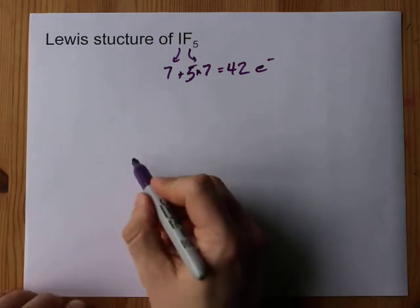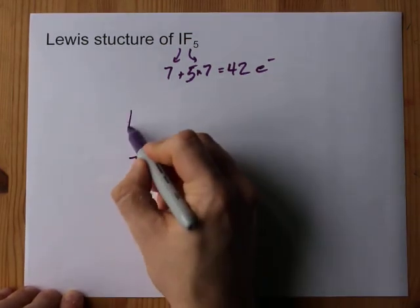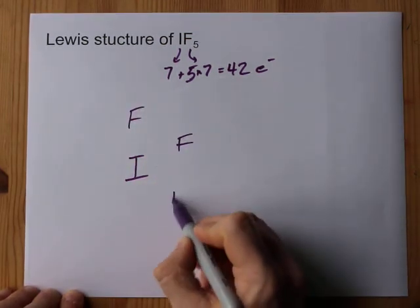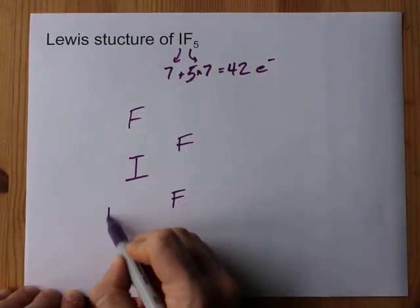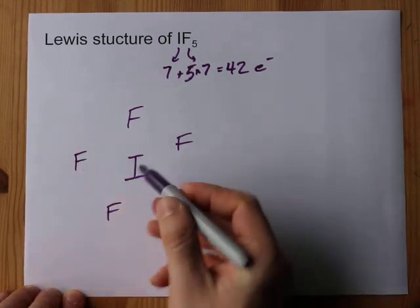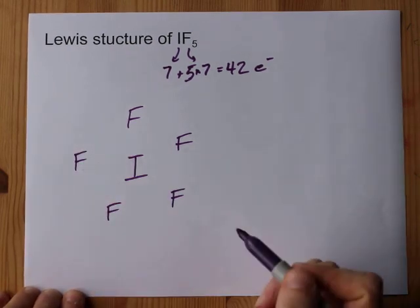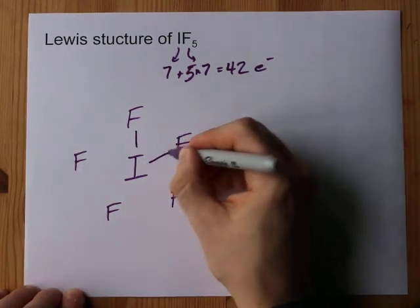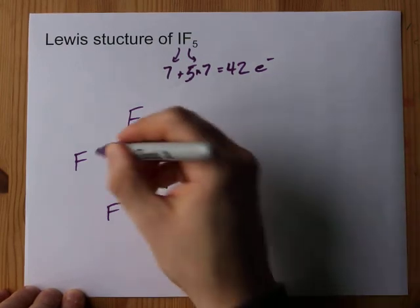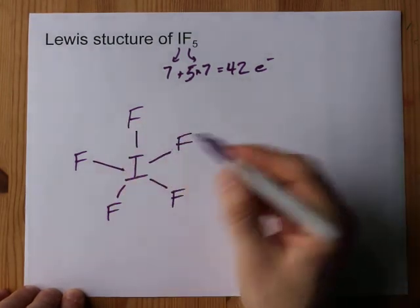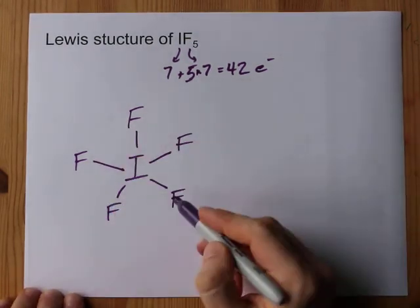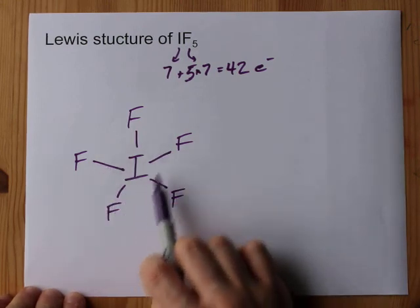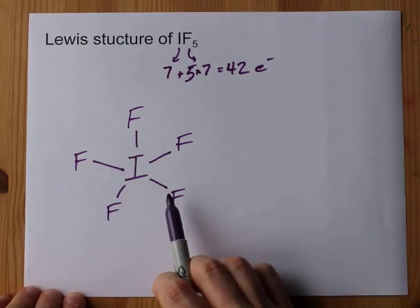I'm going to put iodine in the center and surround it with fluorines: 1, 2, 3, 4, 5. I put them in a pentagon. I always single bond my central atom to my outer atoms, just to hold them all together in a molecule. And that accounts for 10 of the electrons.